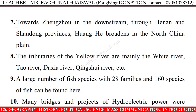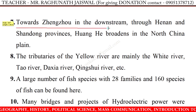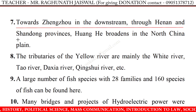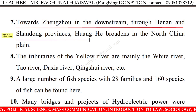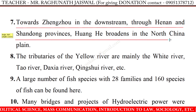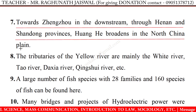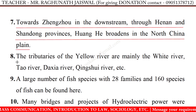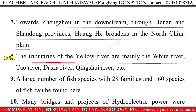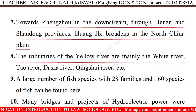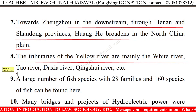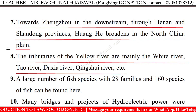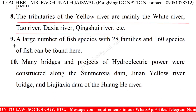17. Towards the downstream through Henan and Shandong provinces, Huanghe broadens in the North China Plain. 18. The tributaries of the Yellow River are mainly the White River, Tao River, Yaxia River, Jingshui River, etc.